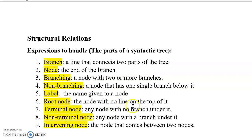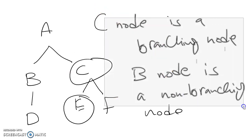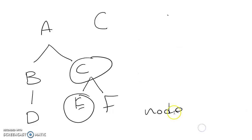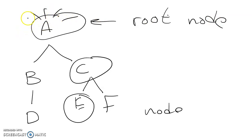Now we have something called root node. The root node is the node with no lines on the top of it. For the tree we have here, A is the root node because there is nothing on the top of this node. So for this tree, A is the root node.